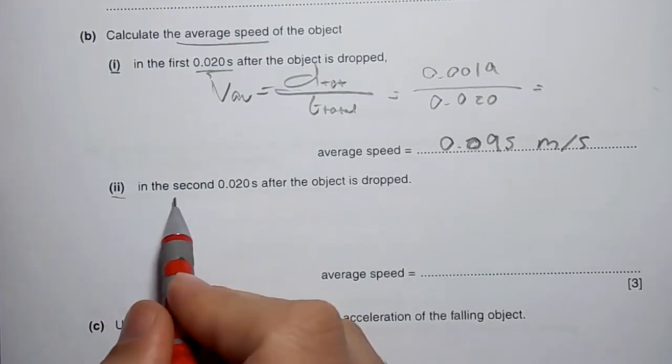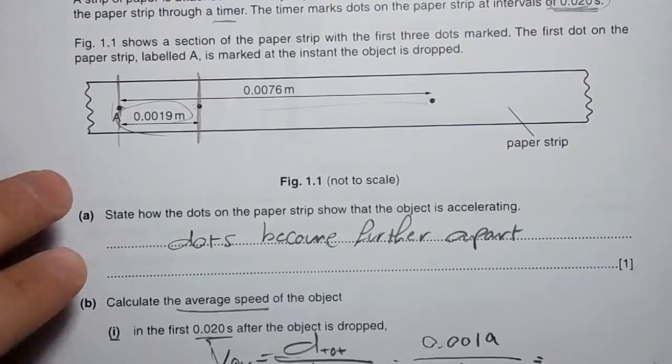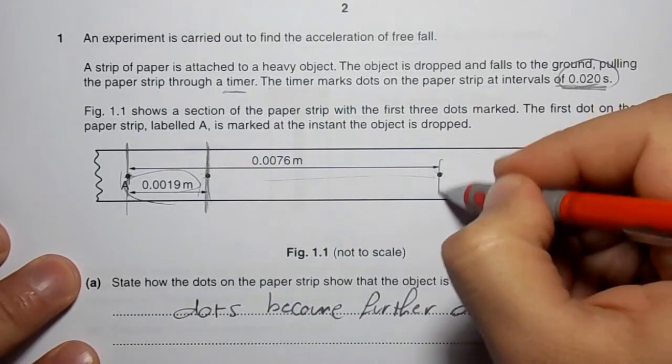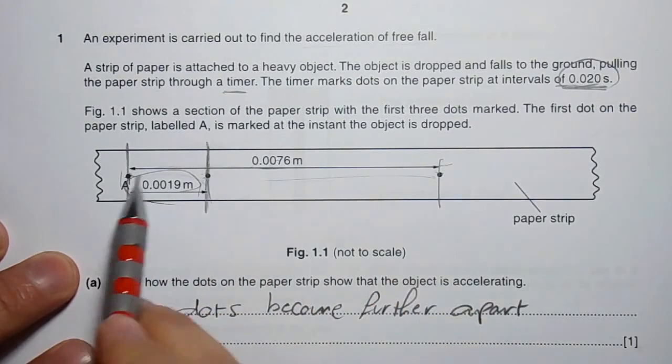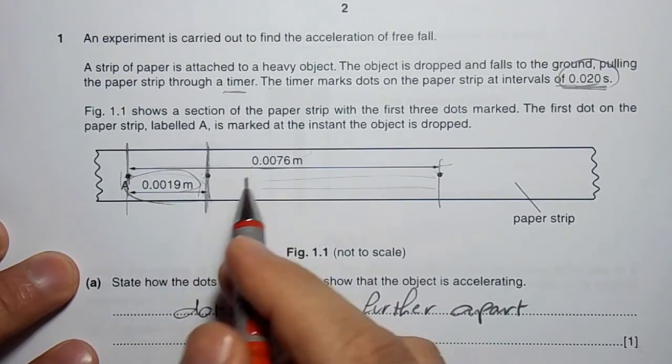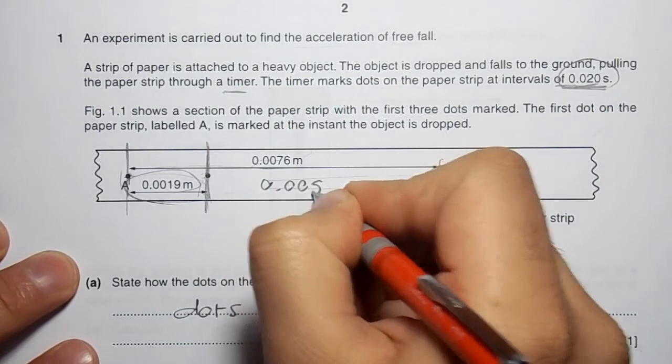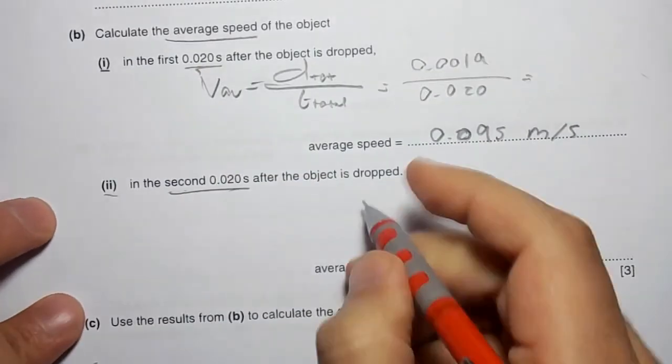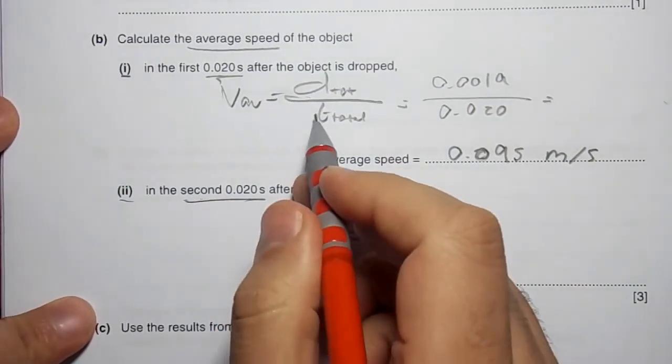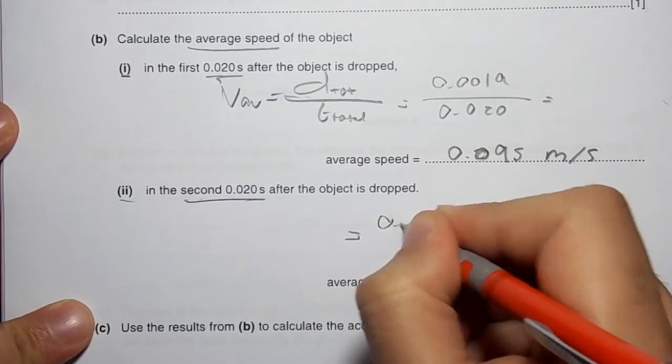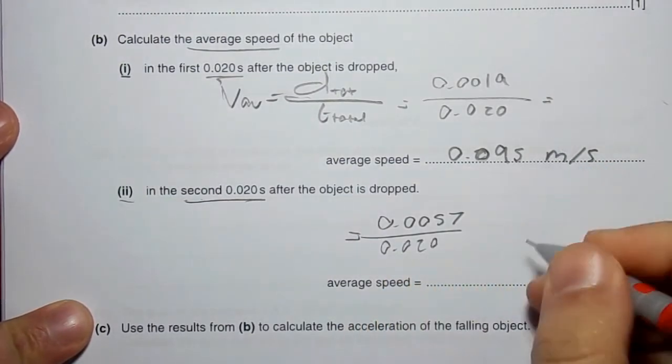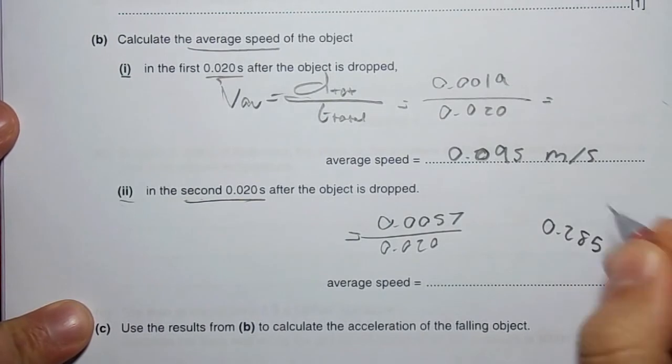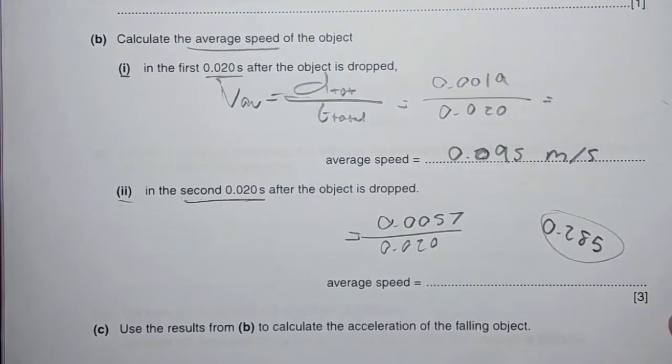For the average speed in the second 0.02 second interval, the distance is 0.0057 meters. Dividing distance by time gives 0.285, which rounds to 0.29 meters per second.